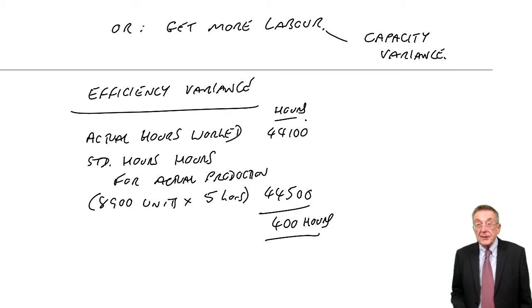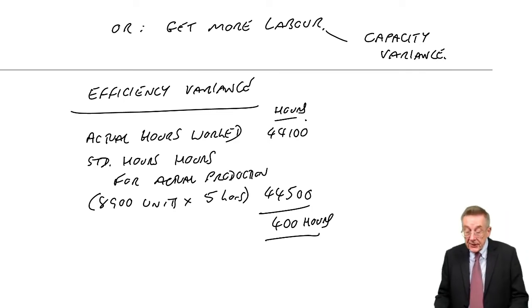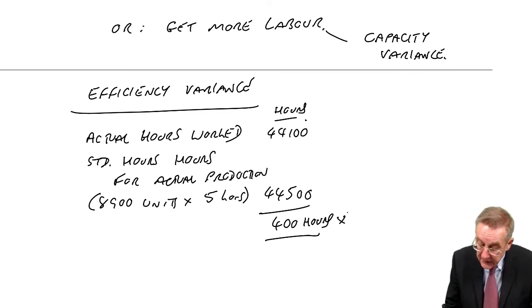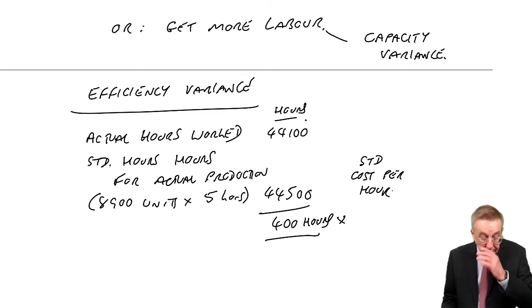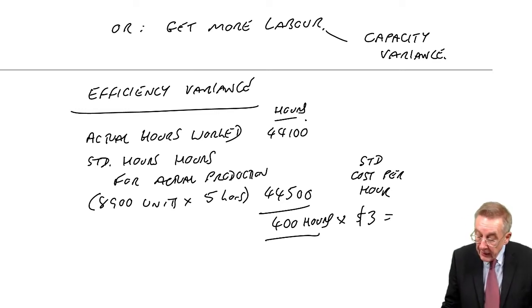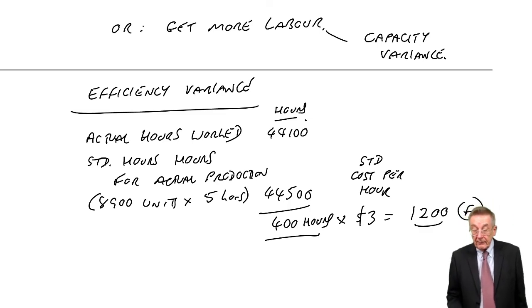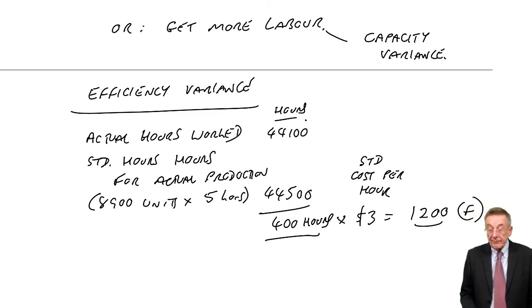Well, for fixed overheads, they've worked 400 hours faster. That saves us at the standard cost per hour. The standard cost per hour for fixed overheads is $3. That saves us $1,200. It's favourable. That's the efficiency.